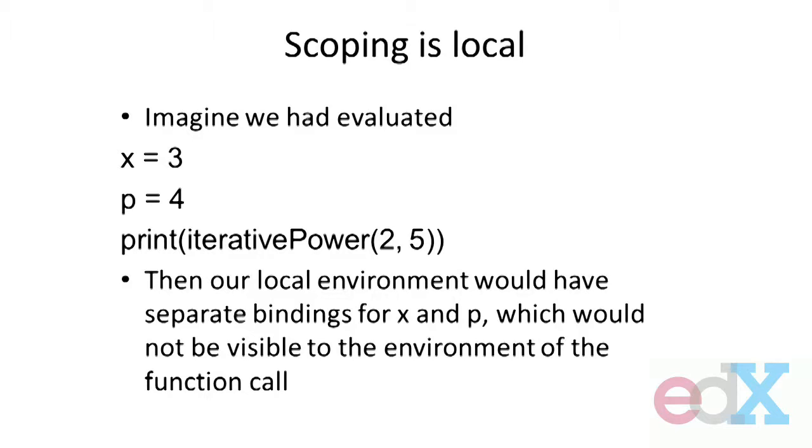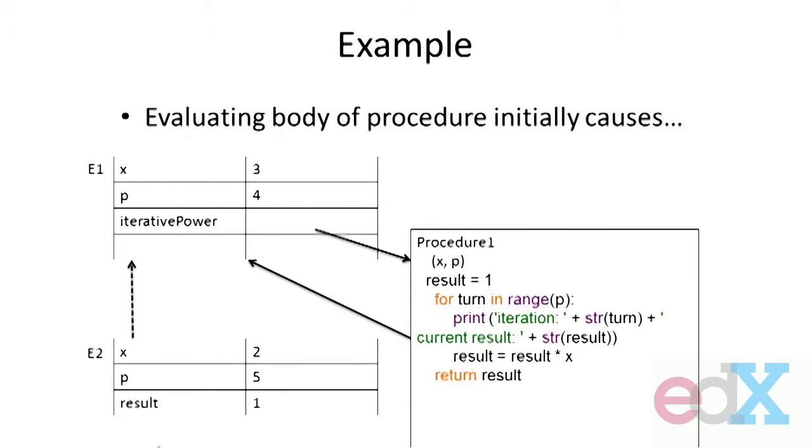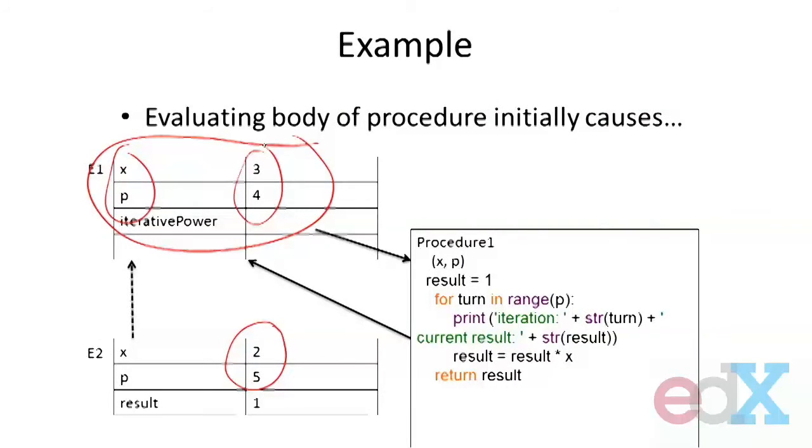This captures that notion of encapsulating the computation. We have bindings for x and p up here. When we call the procedure, we do local bindings to the values passed in. The evaluation of the body only sees the bindings down here in e2. We created a black box - details don't matter. I can reuse this procedure anywhere by simply using its name. If I decide to change the names of the parameters, I'm free to do that, and it doesn't change any computation that relies on just using iterative_power. So procedures give us this wonderful notion of abstraction.